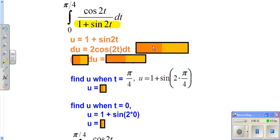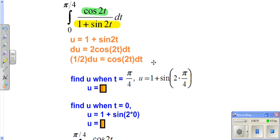So we get du to be 2 cosine 2t dt. You'll notice in our problem, we only have a cosine 2t hanging around. We don't have that 2, so in other words, you've got to multiply both sides by a half to get rid of that.